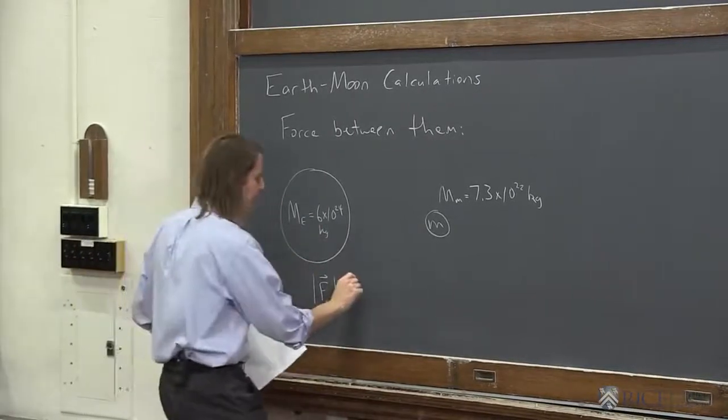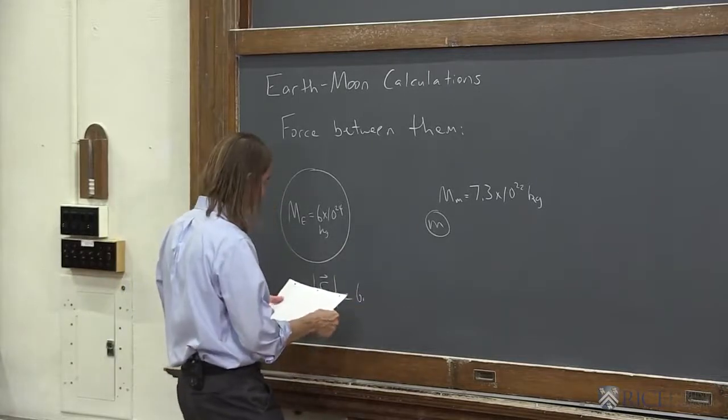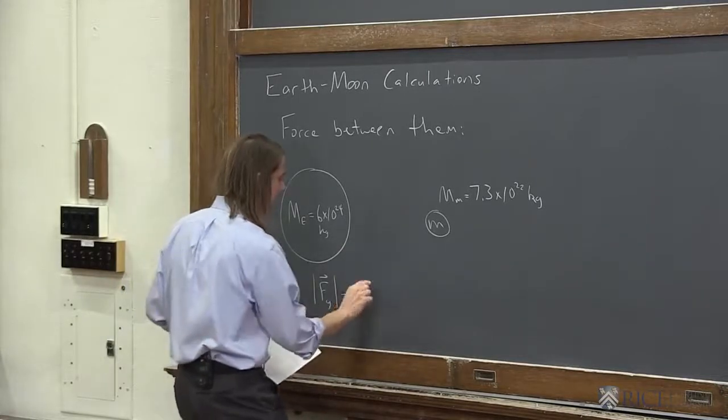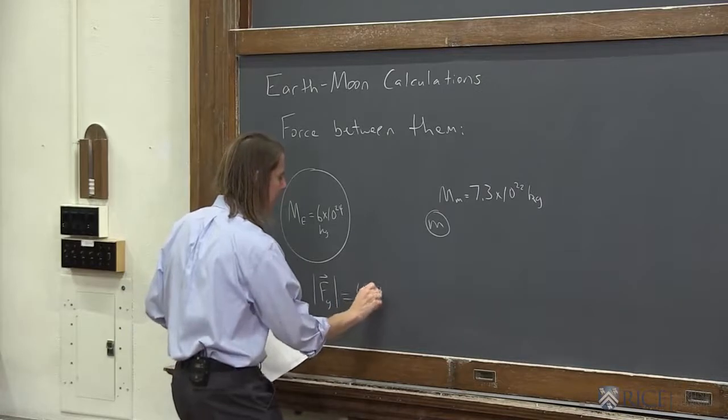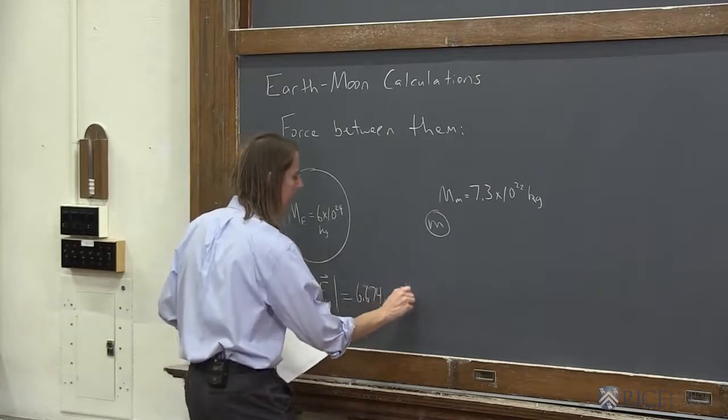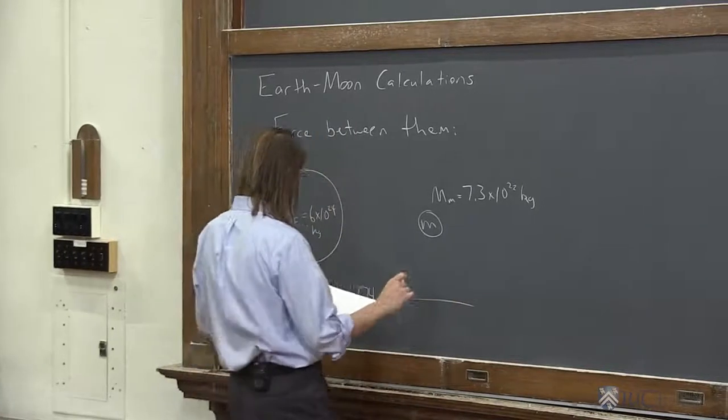So the magnitude of the force, we don't really want to think about directions right now, is G, 6.67... I don't know why I can't remember that number, 6.674 times 10 to the minus 11 times the two masses,